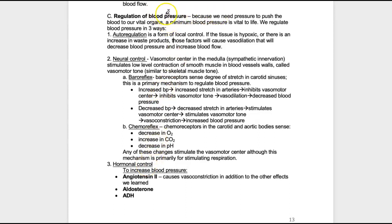Keep in mind, we need pressure to push blood to our vital organs, so a minimum blood pressure is vital to life, and therefore we regulate blood pressure. As far as autoregulation goes, that is just a change in blood pressure due to a local factor. The example in the notes: if the tissue is hypoxic — low oxygen levels — or if there's an increase in waste products, that would cause vasodilation, which would decrease blood pressure in that area but increase blood flow to try to deliver more oxygen and remove those waste products.